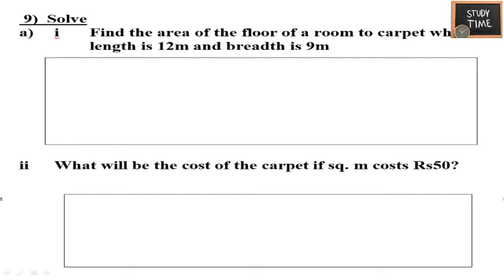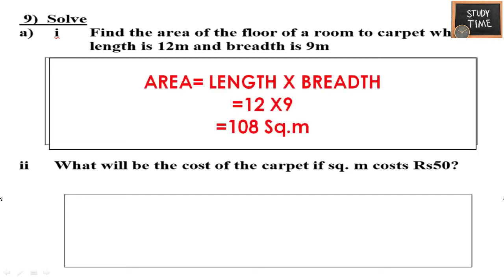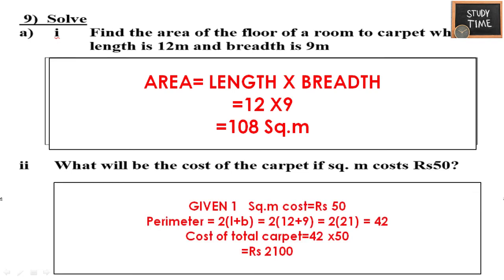Find the area of the floor of a room to carpet, with length 12 meters and breadth 9 meters. Area = 12 into 9 = 108 square meters. Perimeter = 2 into (L plus B) = 42 meters. Then multiply 42 into 50 = rupees 2,100.